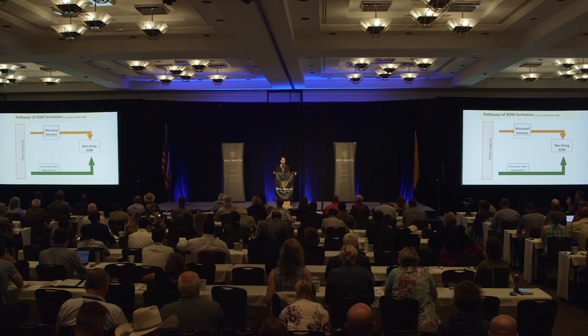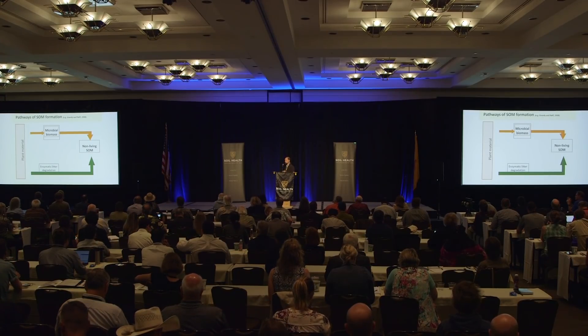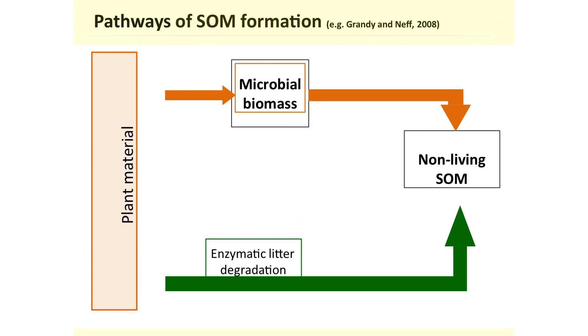These are the two pathways of soil organic matter formation. We have plant material that undergoes external degradation by microbial enzymes and becomes non-living soil organic matter. That's how we historically thought most soil organic matter formed — that it was an exocellular process happening outside the microbial cell, and that the leftover bits from decomposition became soil organic matter.